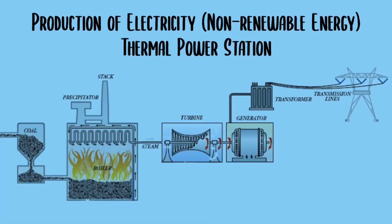Next, let's look at how electricity is produced using non-renewable energy. Coal is burnt to give off thermal energy. The thermal energy changes water into steam, and since steam has a higher pressure than water, it causes the turbine to spin. The kinetic energy from the turbine powers the generator, which produces electricity.